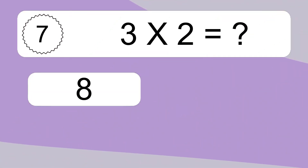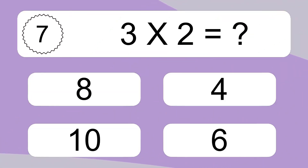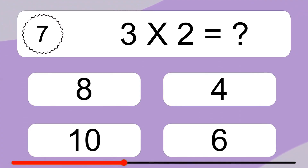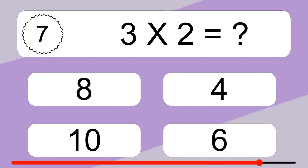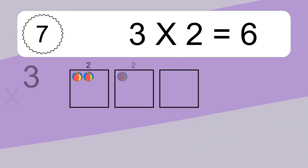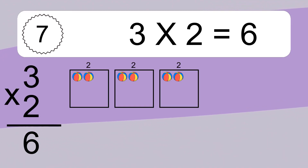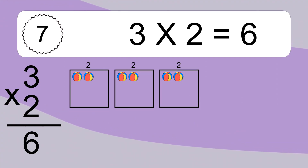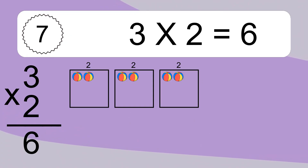Three times two equals what? Three times two equals six. We have three boxes, and each box has two colorful balls inside. If you count all the balls in all the boxes together, you will have three times two balls. This equals six balls.